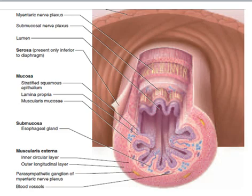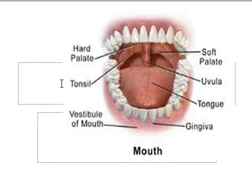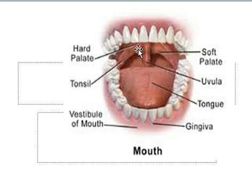Now we will return to the principal organs of the digestive system. The first principal organ is the mouth, also known as the oral or buccal cavity. It has many functions: ingestion (food intake), taste, mastication, chemical digestion, speech, and respiration. The mouth includes the cheeks, lips, the hard and soft palate, and the tongue at the base which maintains the roof of the mouth. The oral cavity is lined with non-keratinized stratified squamous epithelium.